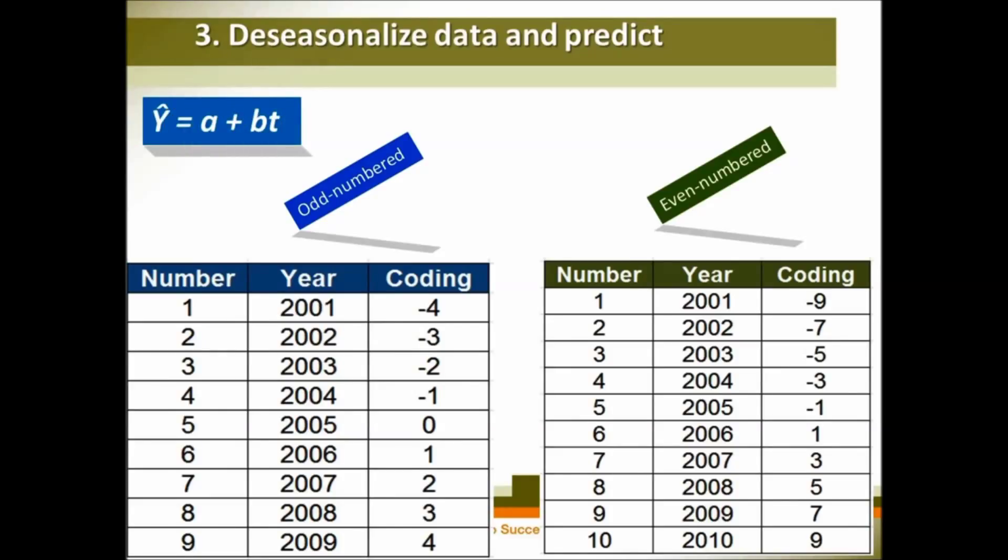So our equation y hat equals a plus b times t is based on the coding of our time. If you code time like this, then you will find to calculate your b that is much simpler. This is the equation you can use to calculate your b value and a value.